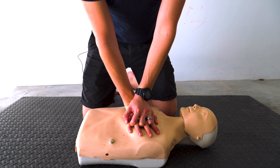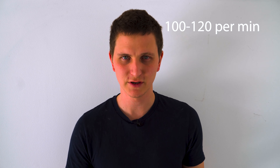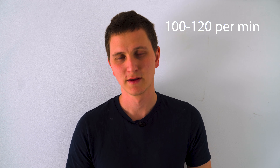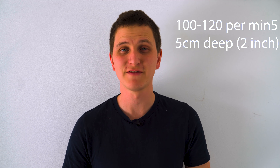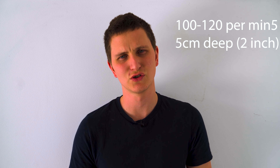Then it comes to compressions. Compressions are when we push hard and push fast on the breastbone — the center of the chest, on the lower half of the sternum. We push hard and we push fast. It's important because we don't want to push too fast or too slow. The rate we're aiming for is 100 to 120 compressions per minute, which is pretty quick. We're wanting to push at least five centimeters on an adult — that's about two inches, which is quite deep.